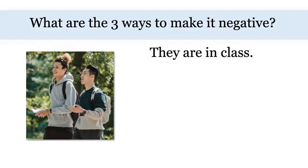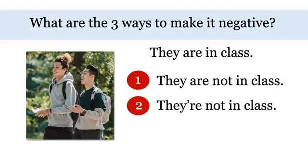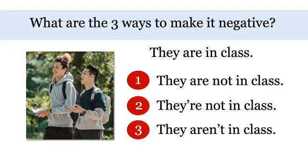What are the three ways to make it negative? This time the sentence is: 'They are in class.' But look at the picture — they are outside. The subject is 'they,' so this time it's plural. The first way: 'they are not in class.' The second way: make a contraction with 'they' and 'are' — 'they're not in class.' The third way: make a contraction with 'are' and 'not' — 'they aren't in class.'